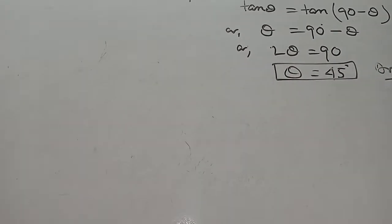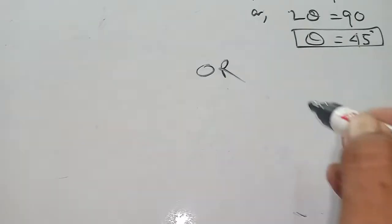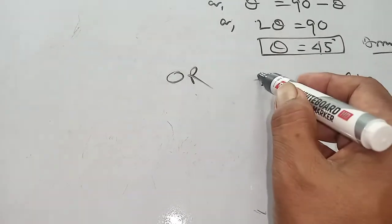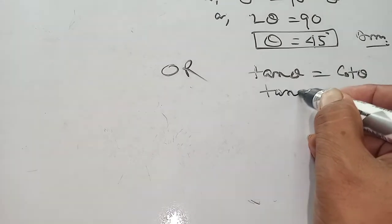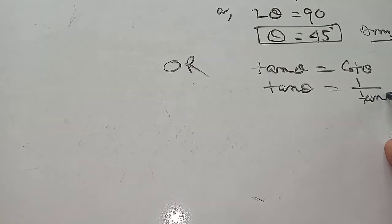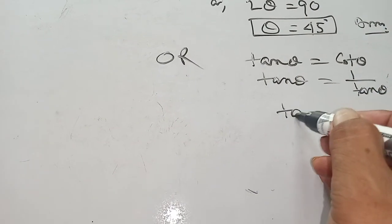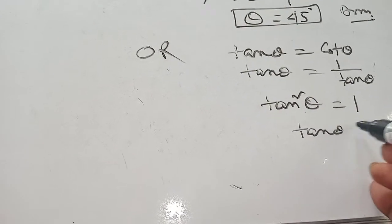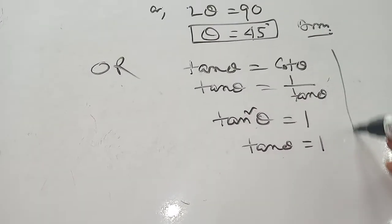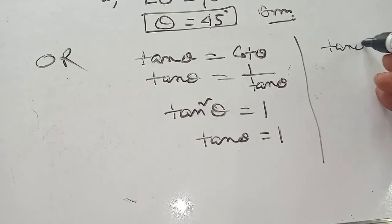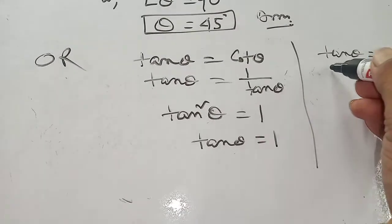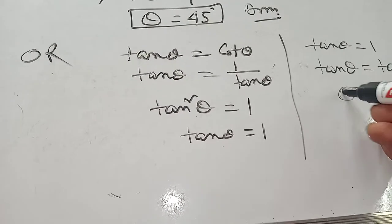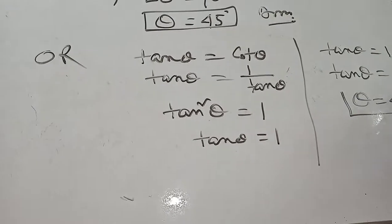Another way to do it: Tan Theta equal to Cot Theta. Cot means 1 by Tan. So Tan Theta equal to 1 by Tan Theta. Cross multiplication gives Tan squared Theta equal to 1. Then Tan Theta equal to 1. Now Tan Theta equal to 1, in which value of Tan is 1? That means Tan 45. So Tan Theta equal to Tan 45. Theta cancels. Theta equal to 45 degrees. This is the answer.